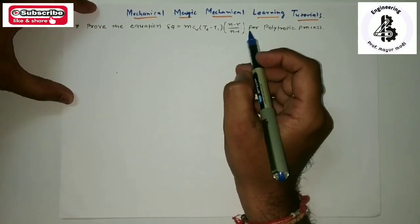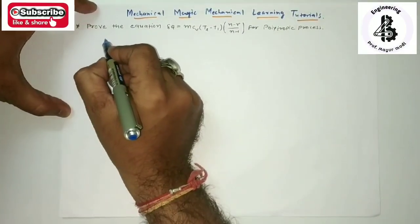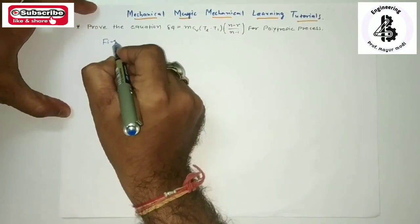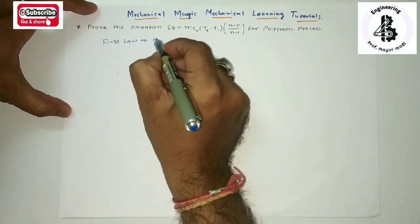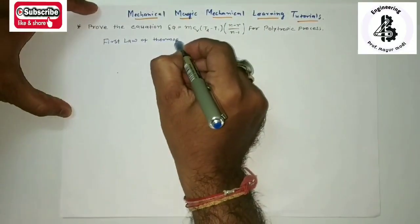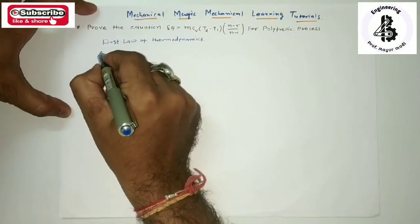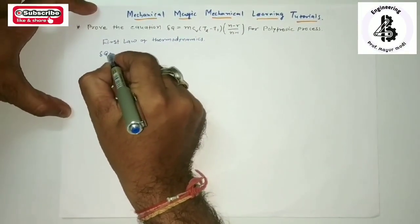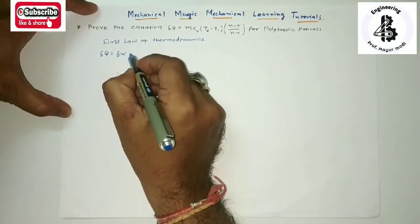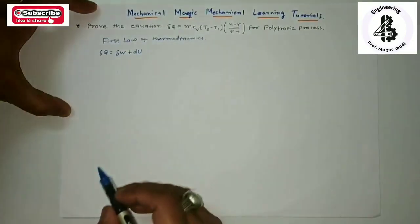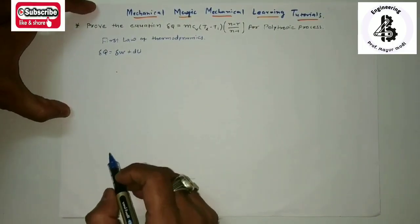For this equation I would like to use the First Law of Thermodynamics. That will be Del Q equal to Del W plus dU, or you can say change in heat supply equals change in work done plus change in internal energy.